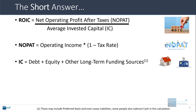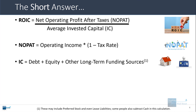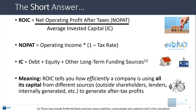Invested capital is defined as the debt and equity on a company's balance sheet — the book values or face values, not market values — plus any other long-term funding sources. Some of this can get a little tricky, which is why there's a footnote we'll address later. ROIC tells you how efficiently a company is using all of its capital from all different sources — outside shareholders, lenders, and internally generated capital from operations — to generate after-tax profits.